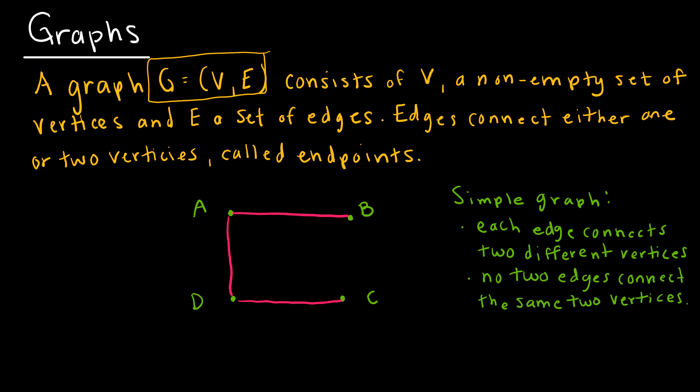So let me give you an example of how it would not be a simple graph. Let's say I added something that went from B to B called a loop. Going from B to B means now this is no longer a simple graph. Or if I had an additional edge connecting vertices A and D, then that would be considered not a simple graph as well.